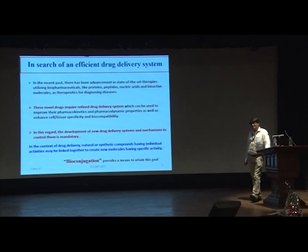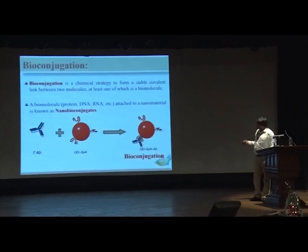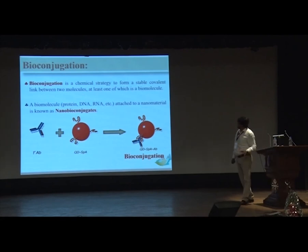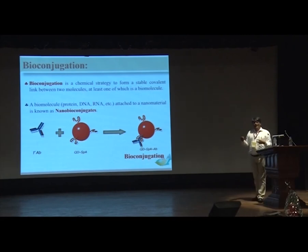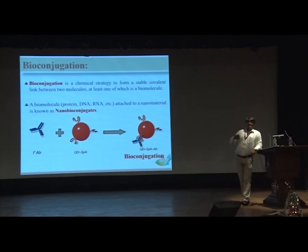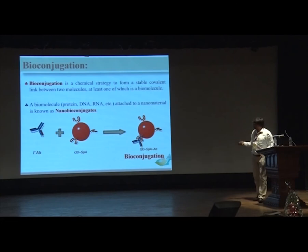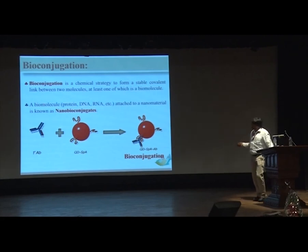Bioconjugation provides the means to attain this goal. In a nutshell, bioconjugation is a chemical strategy to form a stable covalent link between molecules, at least one of which is a biomolecule. When it comes to nanomaterials, normally one is the inorganic material and the other is the biomolecule — protein, DNA, RNA, etc. — attached to a nanomaterial, which is known as a nano-bio conjugate.